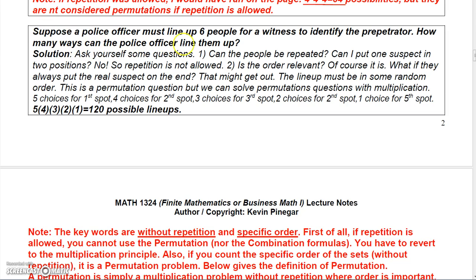Suppose a police officer must line up six people for a witness to identify a perpetrator. Can people be repeated? No — you can't put the same person in two positions. Is order relevant? Yes, because if the order never changed, people would catch on. So this is a permutation question, and we can solve it with multiplication.